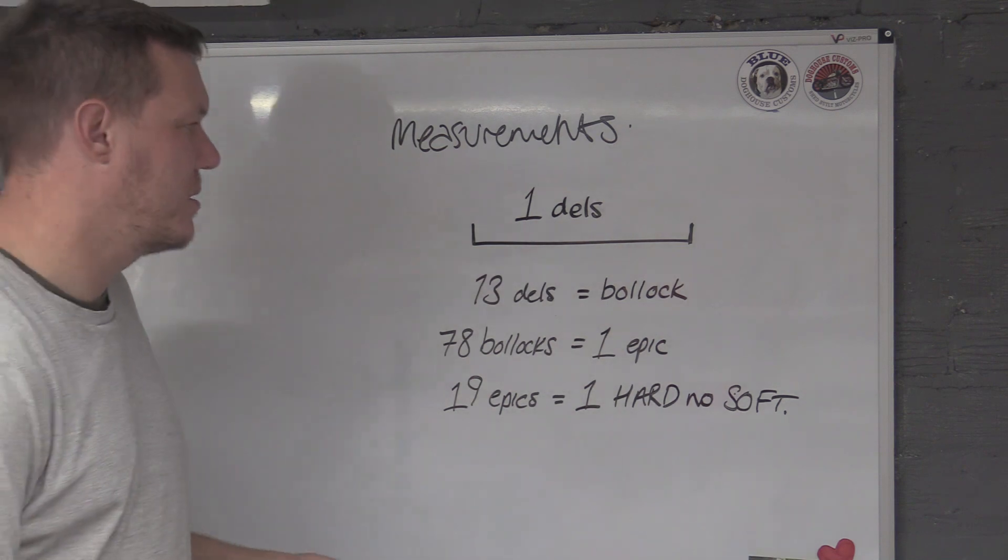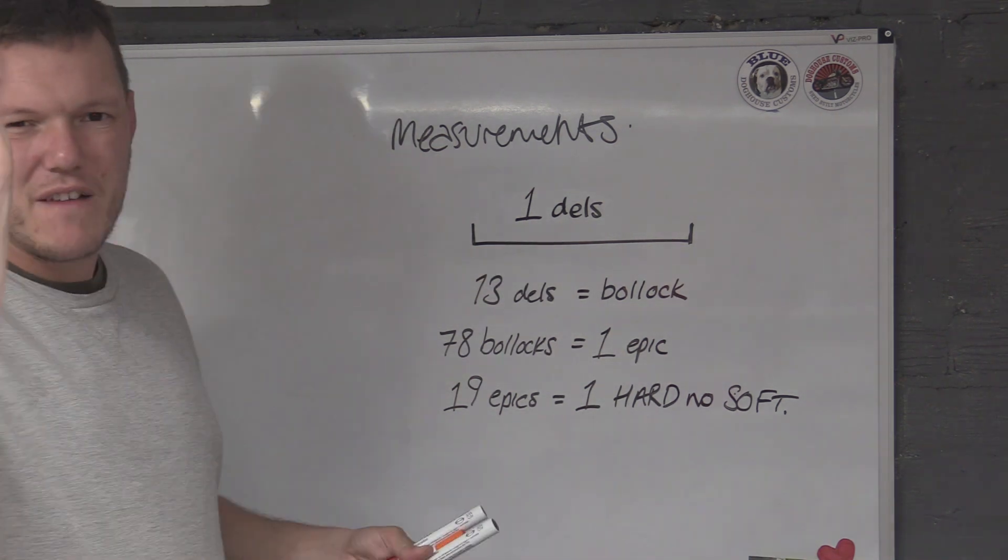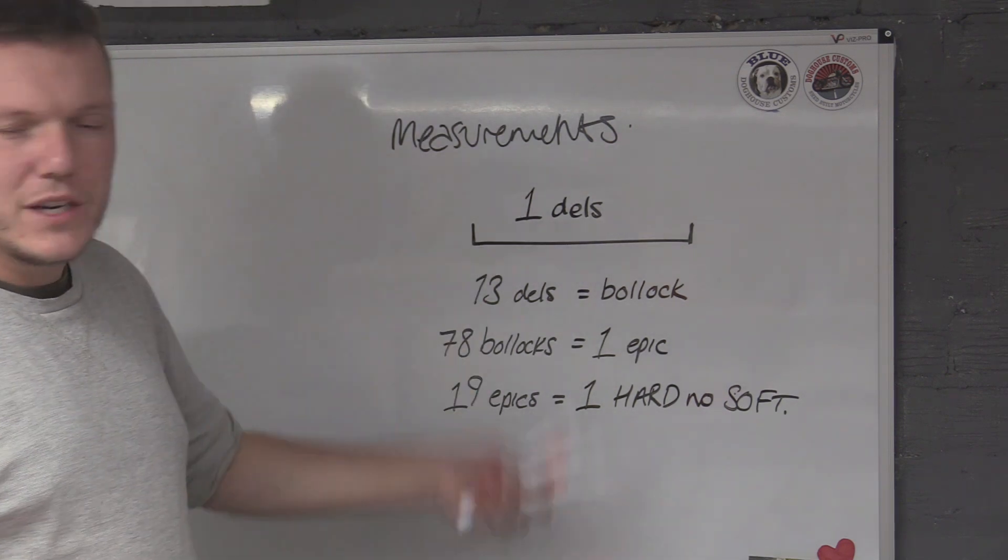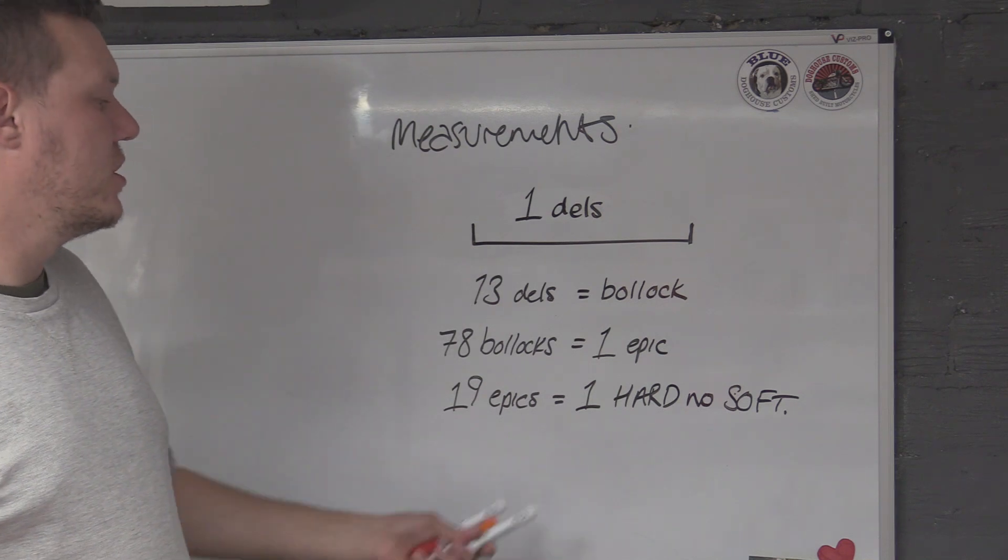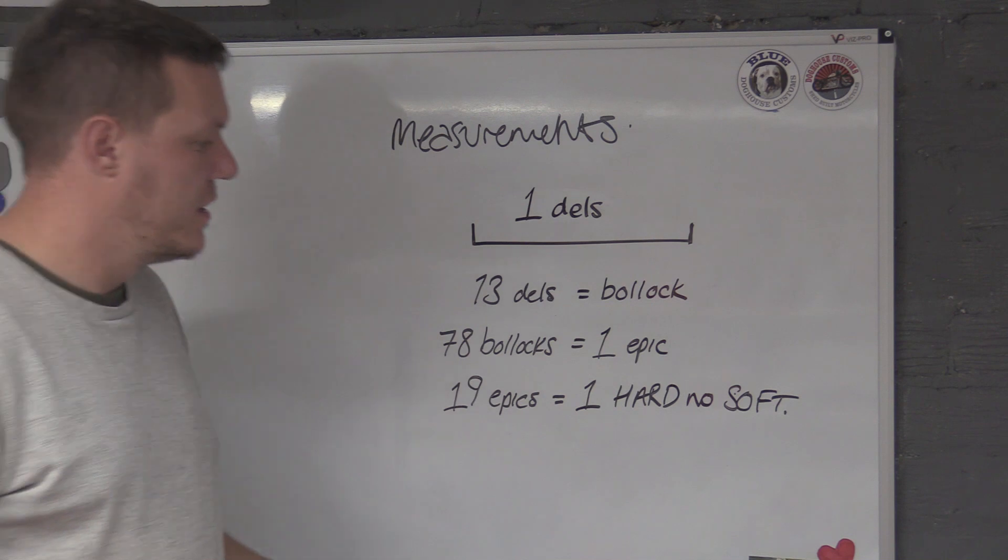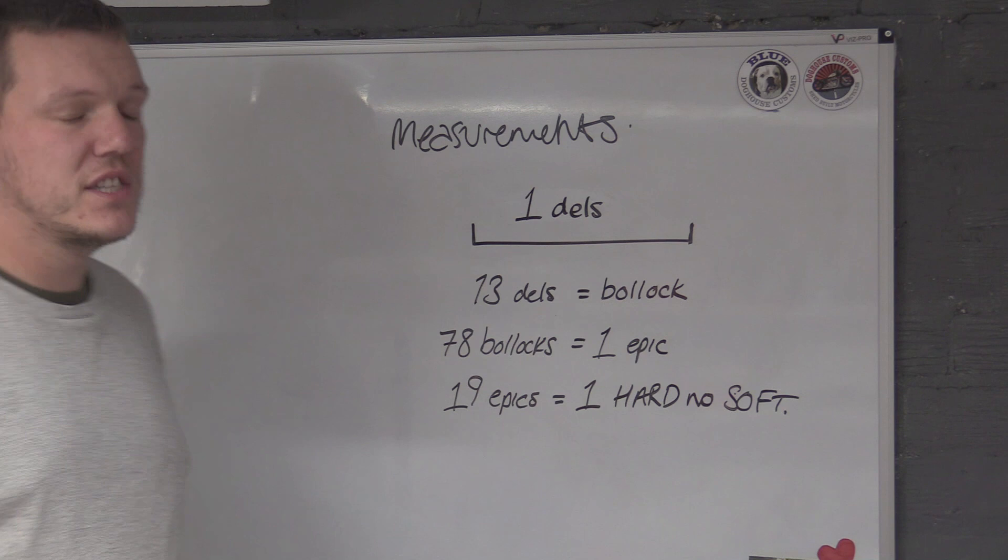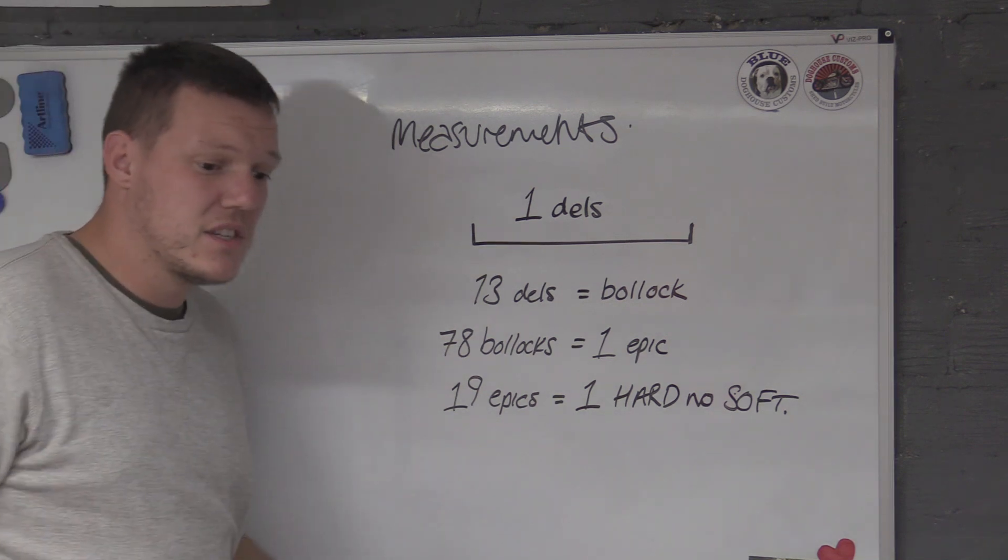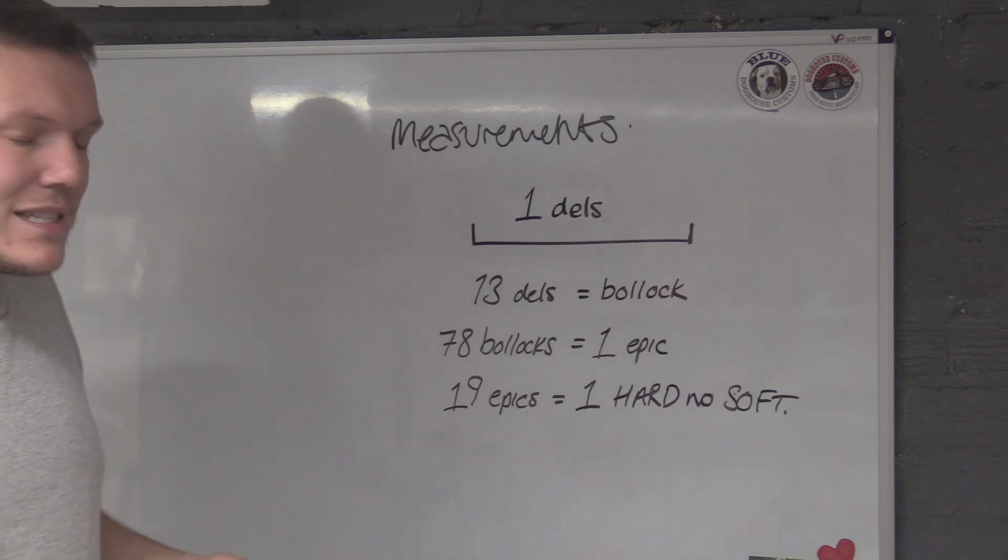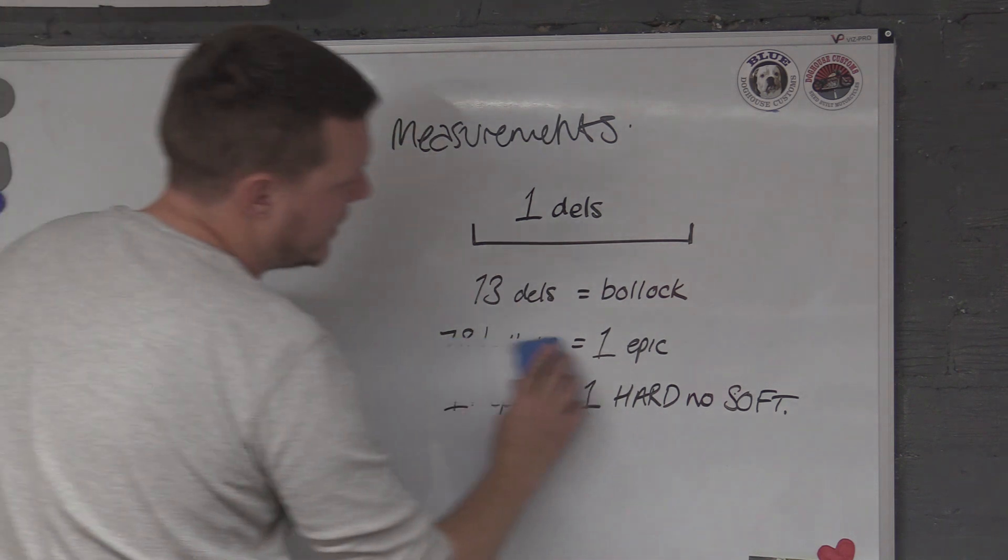This is why they had the big K, which was the original kilogram, so that when people are saying you're getting this much rice per kilo or potatoes or whatever, that it stayed that way. But we could do this and we could just stick to this. You could trade in hard no soft, you know? You could say I've got 15 hard no soft and seven epics.